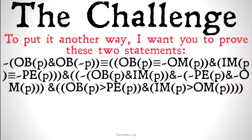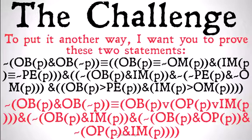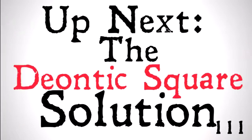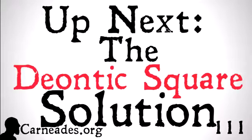To put it another way, I want you to prove these two statements: that the DNC is equivalent to the logical description of the Deontic Square, and that the DNC is equivalent to the logical description of the Deontic Trifold. It looks like a tough challenge, but it's actually not that hard when you get down to it. I challenge you to do this. If you're curious for the solutions, check out the next videos — we're going to be talking about the Deontic Square solution. Watch a new video every single day here at Carneades.org, and stay skeptical, everybody.